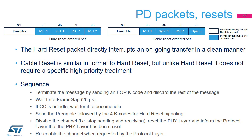The Type-C connector does not support a dedicated reset signal. Consequently, reset conditions are signaled by using specific PD packets transferred over the CC line. These packets, called ordered sets, are completely handled by the physical layer. Two types of reset are defined: hard reset, which aborts ongoing transfers, and cable reset, which does not require high-priority treatment.